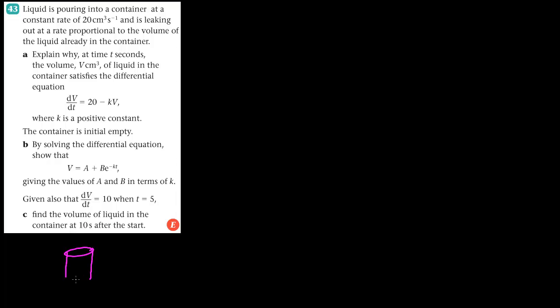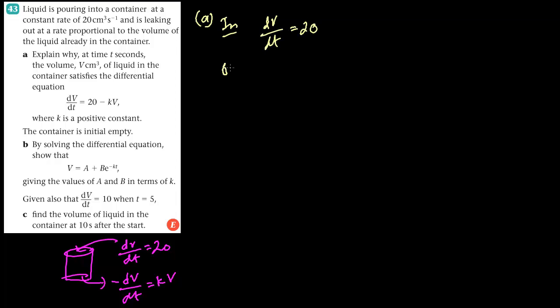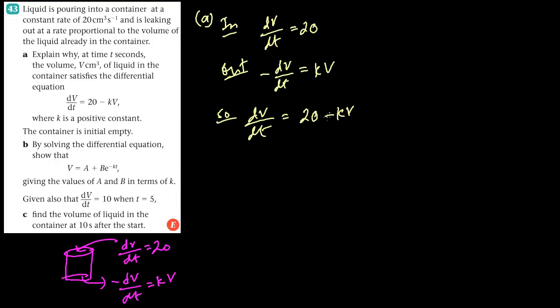New problem: liquid is poured into a container at a constant rate of 20 cm³ per second, so dV/dt = 20. Liquid is also leaking out at a negative rate proportional to the volume, meaning dV/dt = −kV, where proportional means multiplied by a constant k. The overall rate is the difference, so dV/dt = 20 − kV.